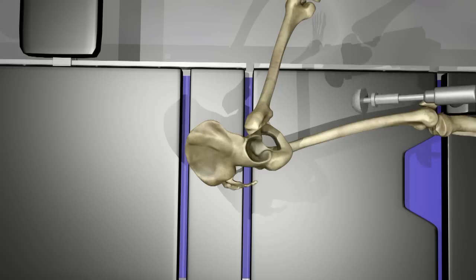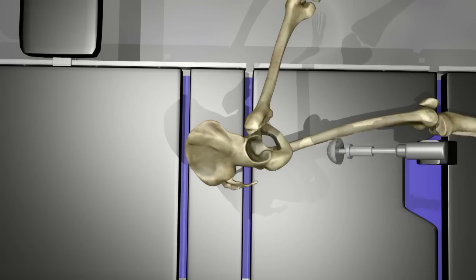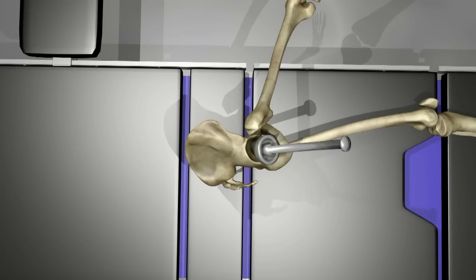The arthritic surface of the acetabulum is removed with a reamer. This prepares it to receive the acetabular component of the new prosthesis.